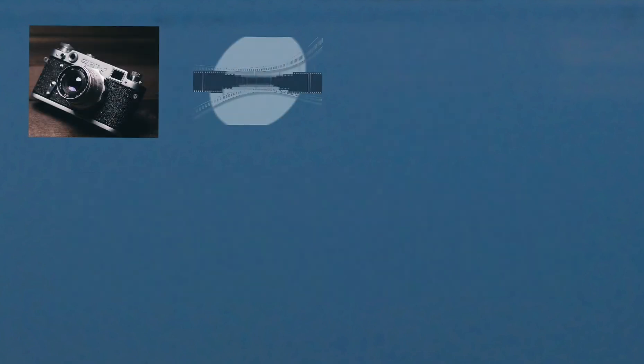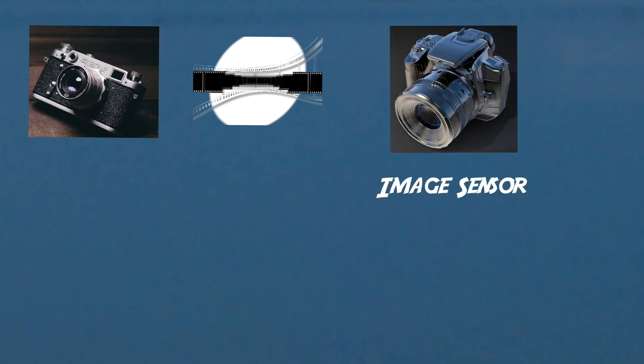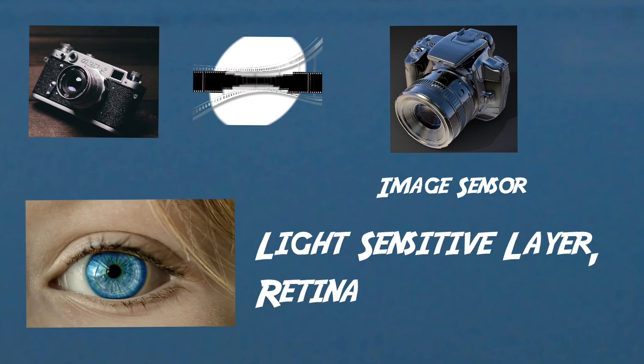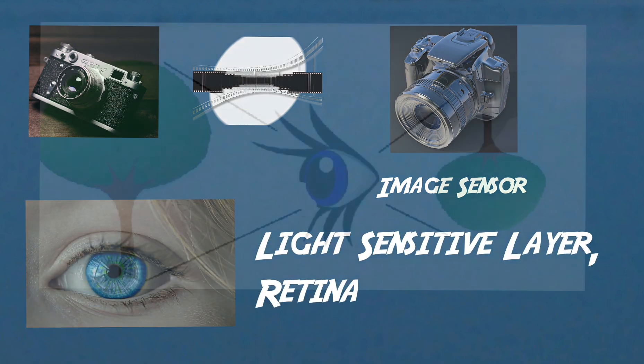In analog cameras, the inverted image is projected onto a film. In digital cameras, the image is projected onto a sensor. And in the case of our eyes, the image is projected onto a light-sensitive layer called the retina.